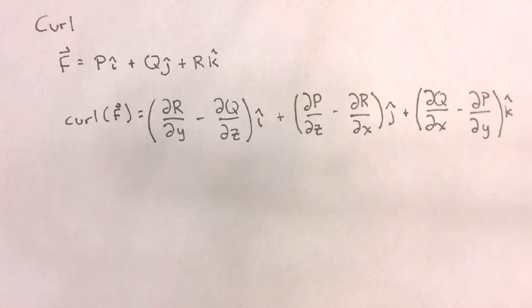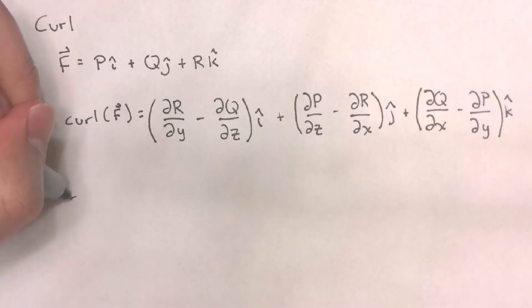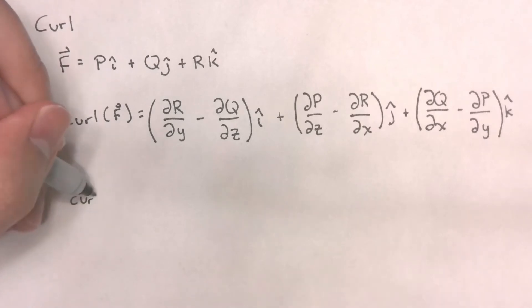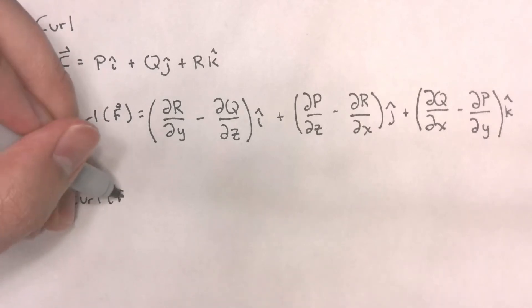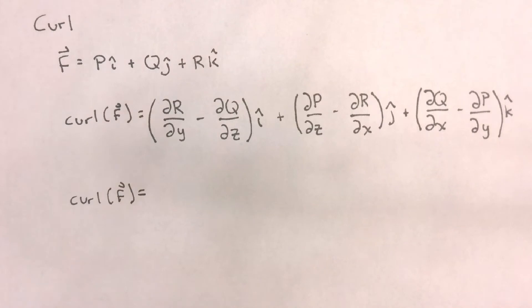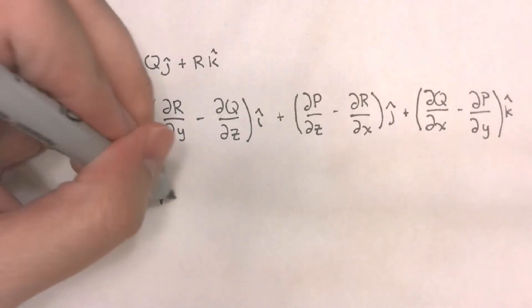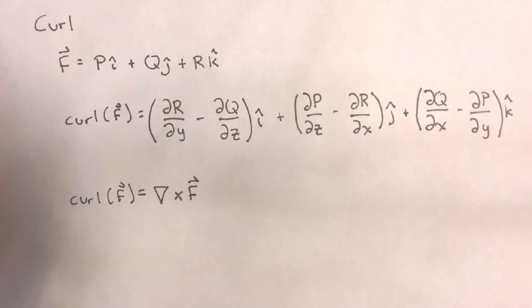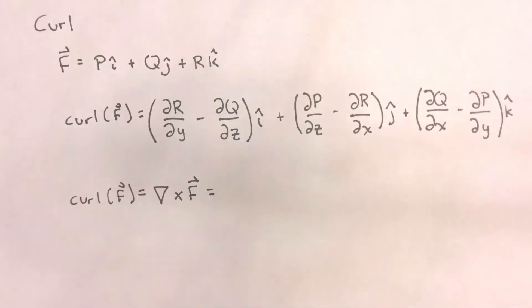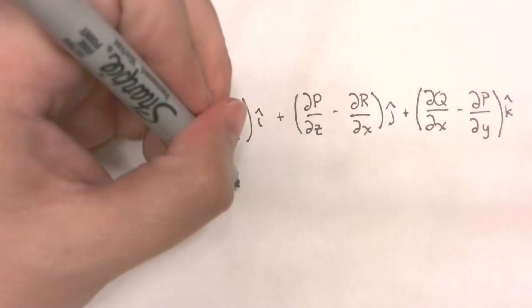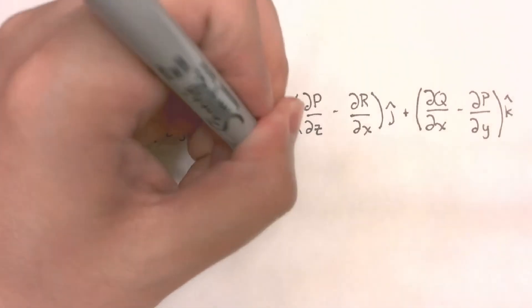The curl can be written in terms of the del operator as follows. If the divergence is del dot f, the curl will be del cross f, which can also be expressed as the determinant of the following matrix.